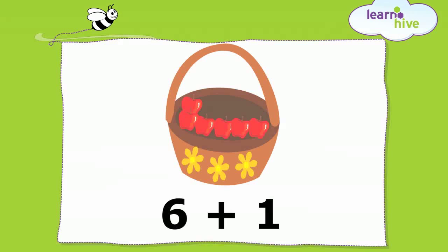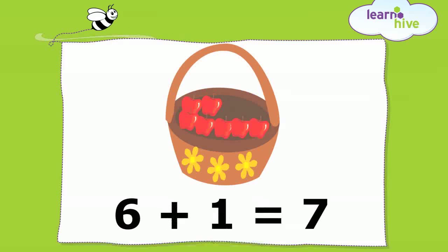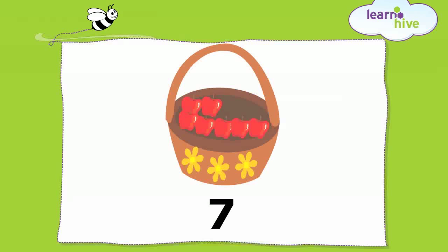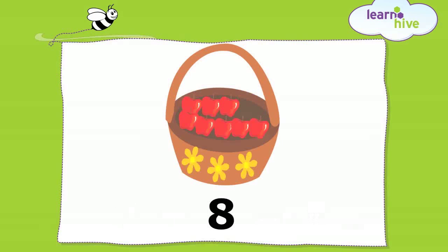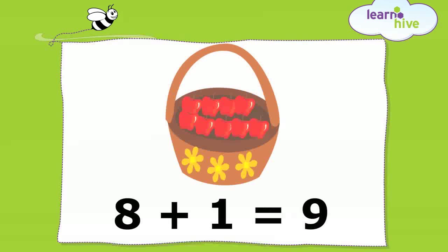Let us see if you can guess how many apples there will be if we add one more apple to six. Correct, seven. And seven plus one is eight. Eight plus one gives nine.